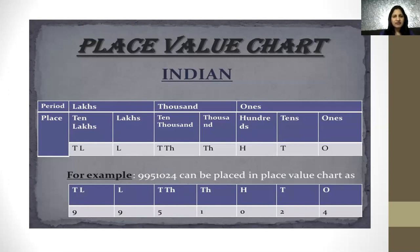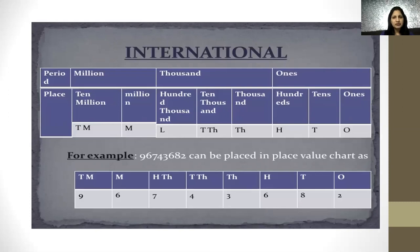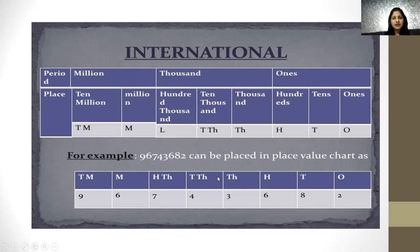Now let us see the next place value chart — the International place value chart. In this chart, there are three places in the ones period, three places in the thousands period, and three places in the millions period. For example, 96,743,682: 682 comes in the ones period, 743 comes in the thousands period, and 96 comes in the millions period.